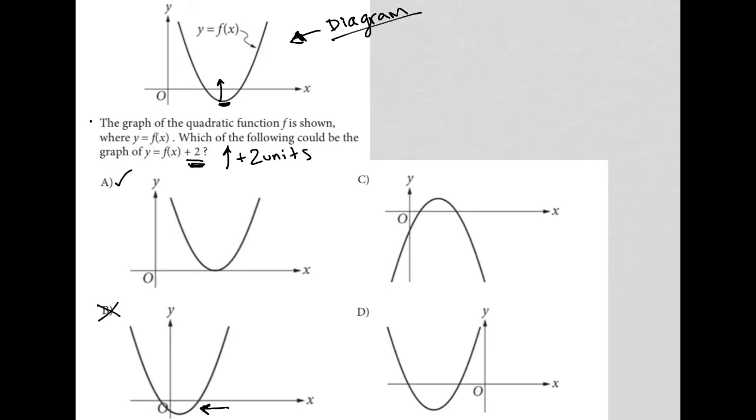Choice C, the graph has completely flipped over, which this plus 2 would not do. So choice C is gone. And choice D, the graph is shifted dramatically to the left. So choice D is also incorrect. Choice A must be the correct answer.